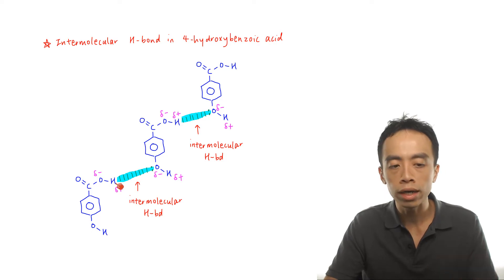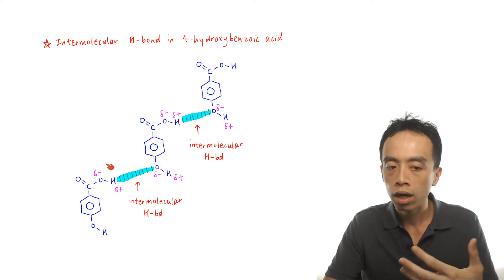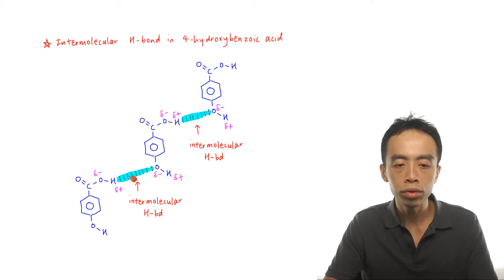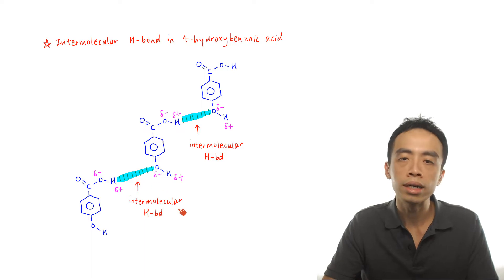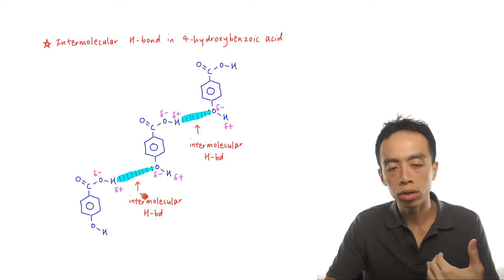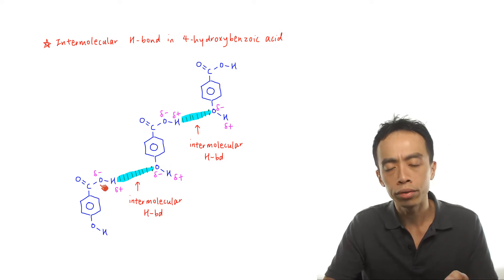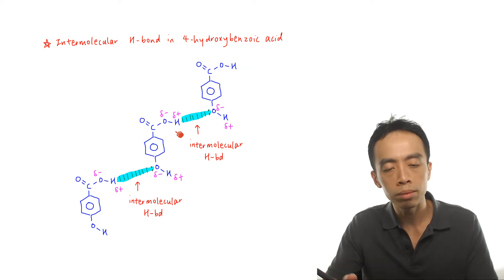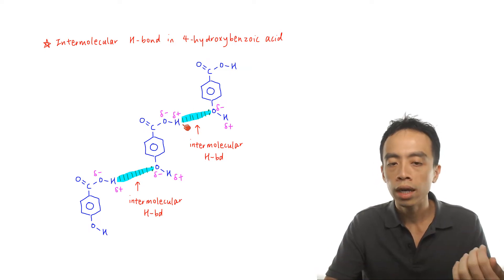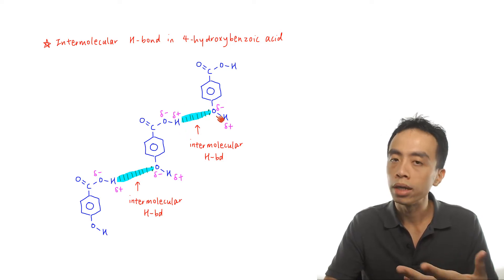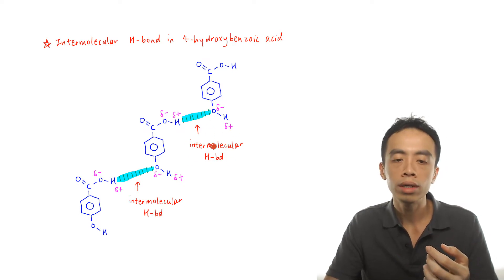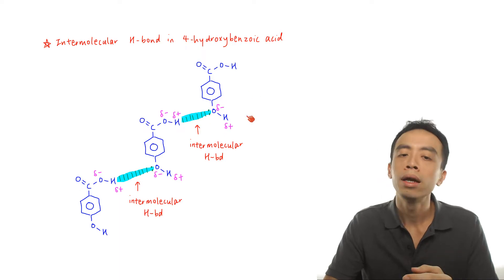This hydrogen is attached to an electronegative oxygen, so it carries a delta positive charge, while oxygen carries a delta minus charge. This oxygen can use its lone pair to interact with this hydrogen from a neighboring molecule, so this is considered an intermolecular hydrogen bond — between one molecule and another molecule. Similarly, this acid group is also capable of forming an intermolecular hydrogen bond with a neighbor: this partial positive hydrogen can interact with an oxygen from a neighboring molecule which is partial minus, and this interaction is also an intermolecular hydrogen bond.